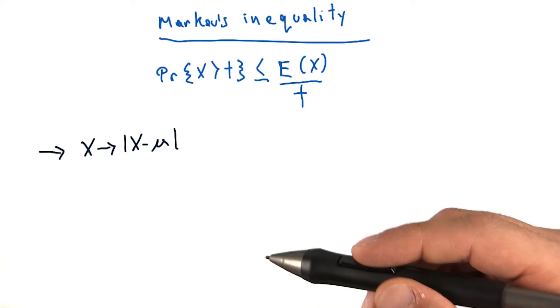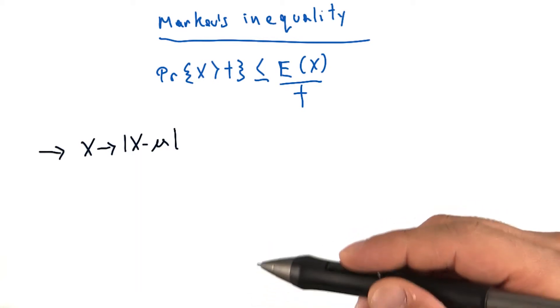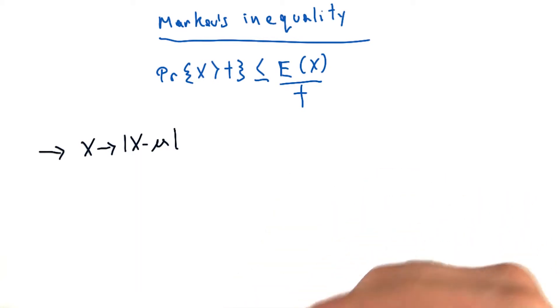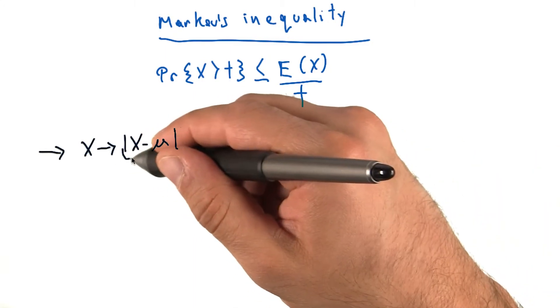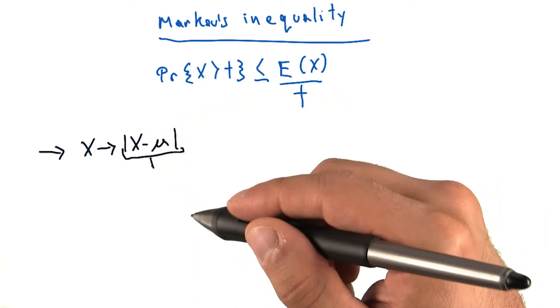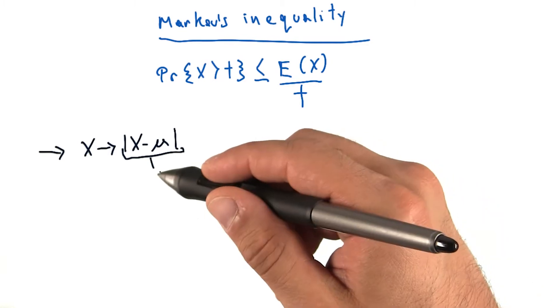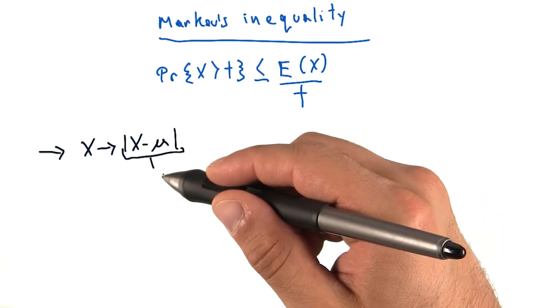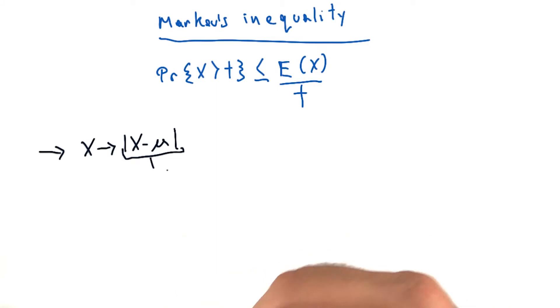Now, this becomes really interesting when you substitute x with x minus mu, meaning the mean value of x. That is, you can think of this quantity here on the right as x's deviation from its mean value. When you take this and substitute it into Markov's equality, it then becomes something called Chebyshev's inequality.